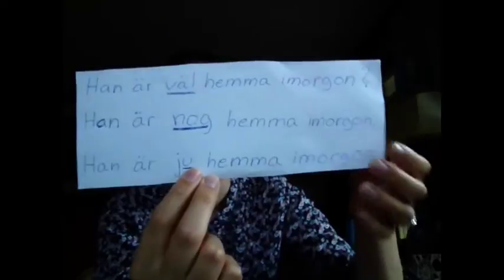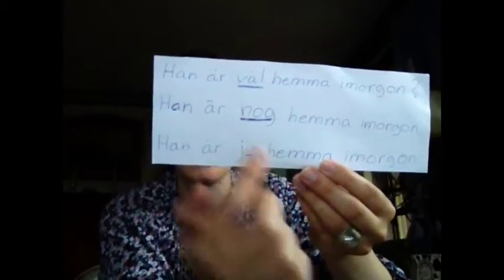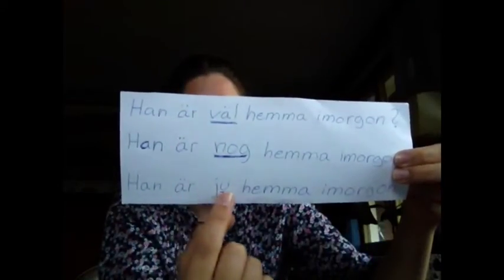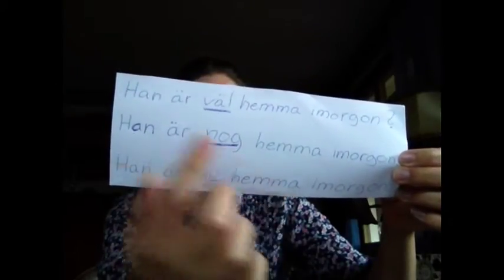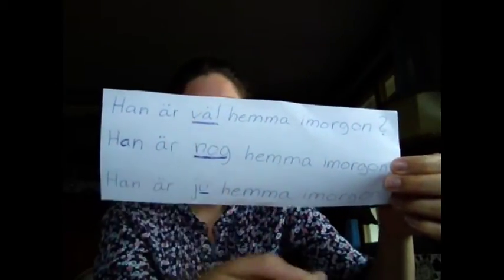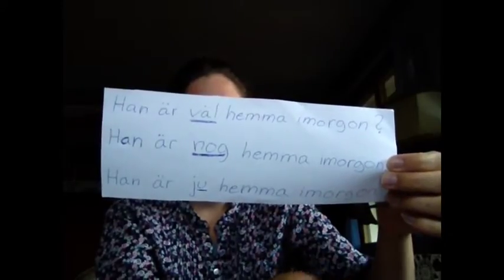If you already speak German, you will recognize the word ju as the German word 'ja,' as in 'aber er ist ja zu Hause.' In this last sentence there's much more certainty than in the other two, and it's also slightly surprised — like 'oh, he is at home tomorrow!' Han är ju hemma imorgon. You want to make the other person understand that he is at home tomorrow, and you think they should already know this. If you learn to recognize these words, you'll add more nuances to your comprehension of Swedish.